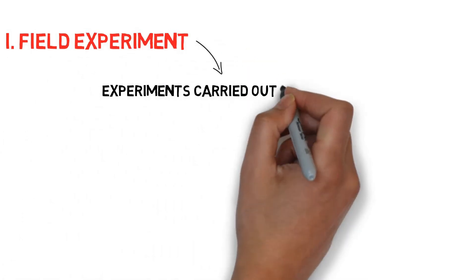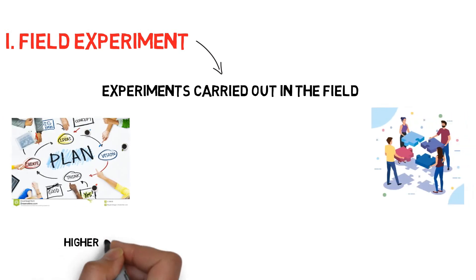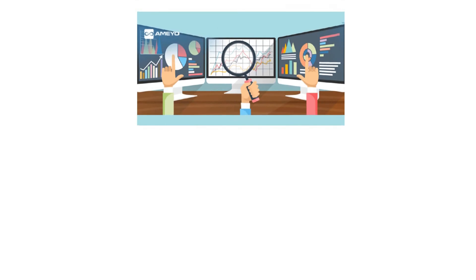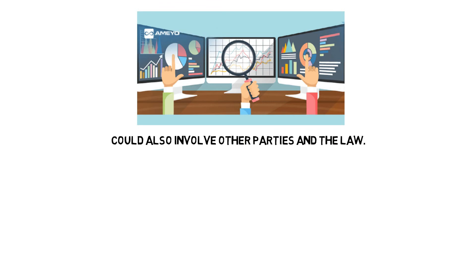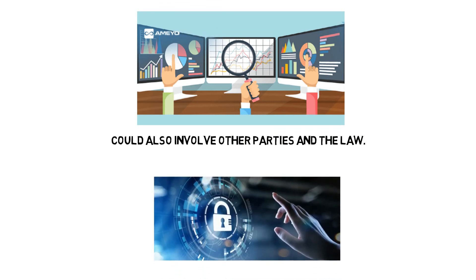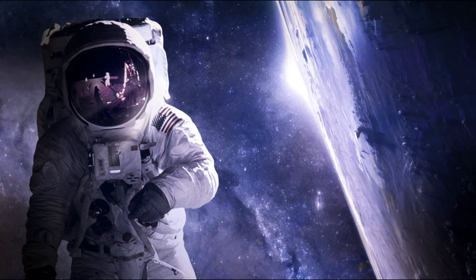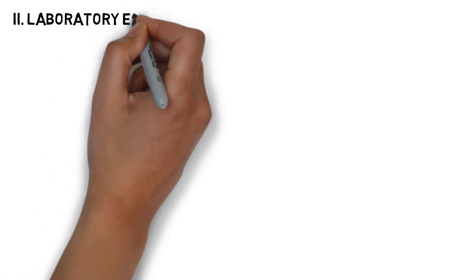One: field experiment. Experiments carried out in the field require careful planning and coordination; higher contingencies in terms of budget and time must be considered. Controlling and monitoring changing parameters on site could involve other parties, and the security of instrumentation must be taken seriously. For example, an astronaut looking at the night sky and recording data regarding the movements or brightness of an object in outer space.